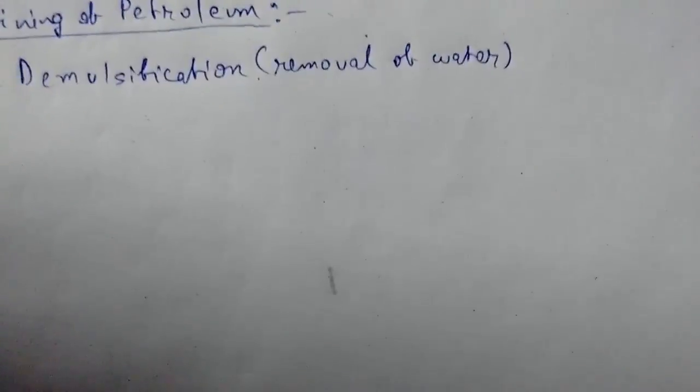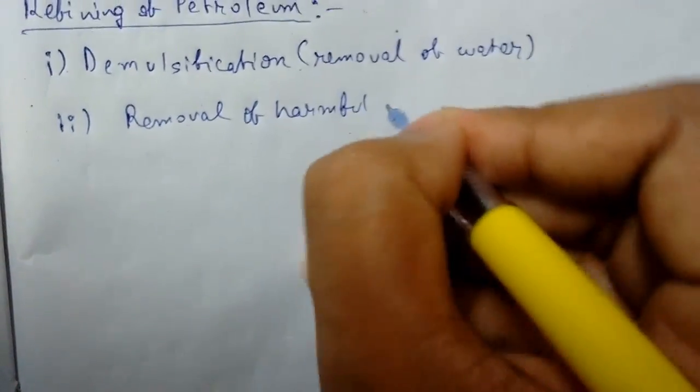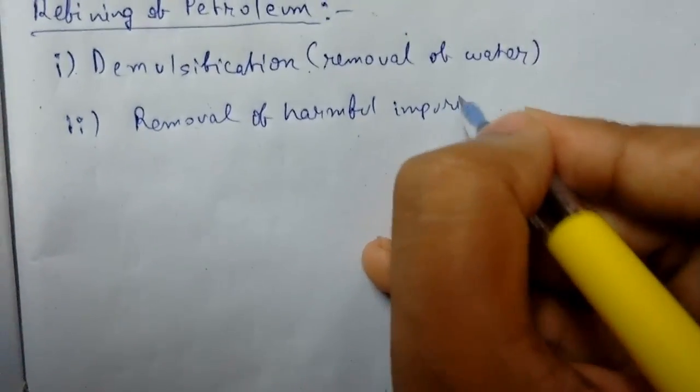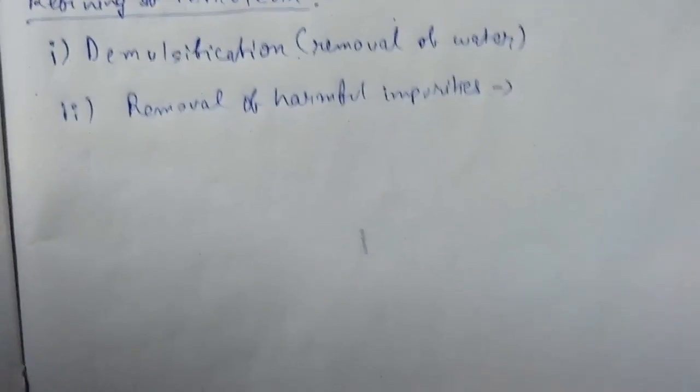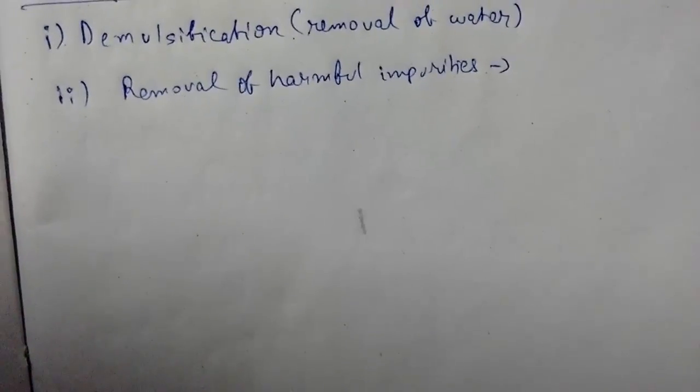Next we have removal of harmful impurities. Excessive salts present in the crude petroleum like NaCl and MgCl2 can corrode the equipment.